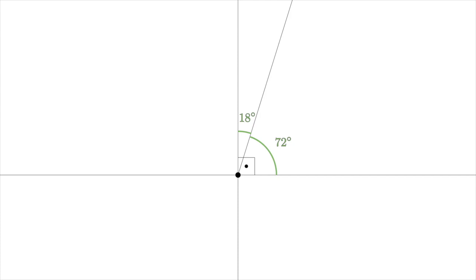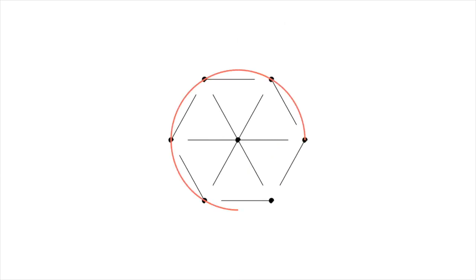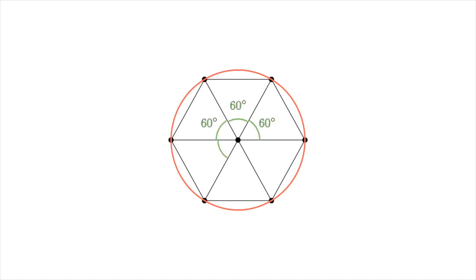You might be wondering why out of all numbers we used 360 to measure the full angle. It turns out that it all comes from this picture. The Babylonians were fascinated by it and they used a base 60 counting system, which means that they used 60 different symbols to represent numbers. So, they decided to associate each of these six angles with the number 60. Hence, they got 6 times 60 equals 360 degrees for the full angle. And why the fascination? Well, because of the property that all the segments on this picture have equal length. We will see why this is the case in a later video.